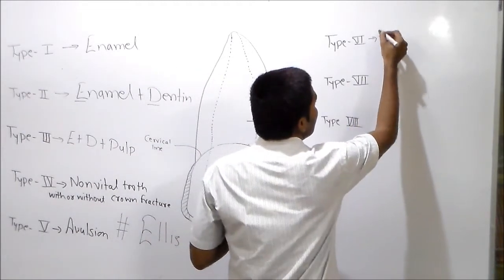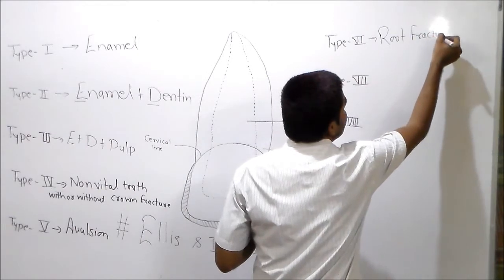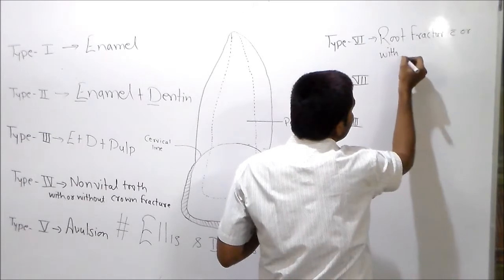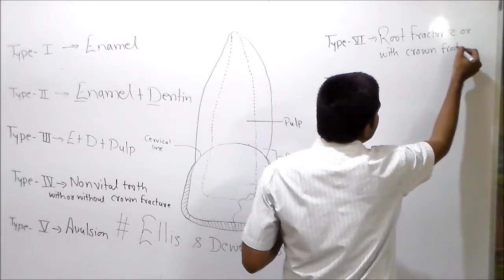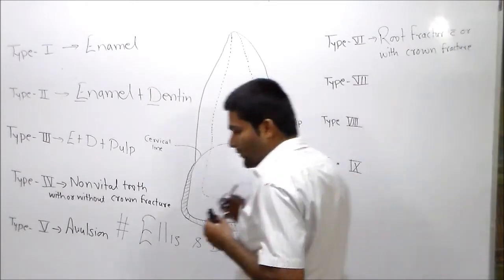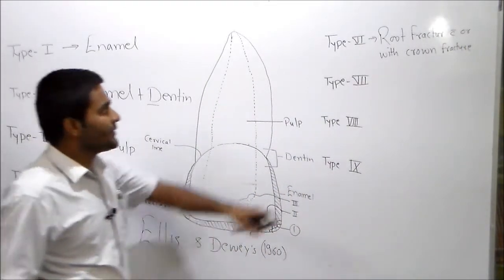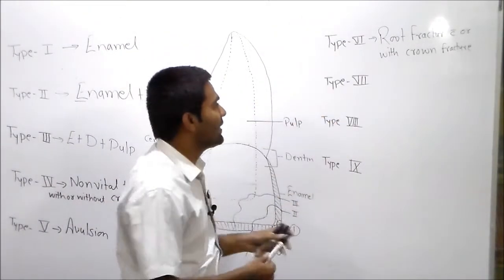Now type six, class six. Root fracture, root fracture with or without crown fracture. I mean if you have a patient who has a root fracture, then you will have an enamel, dentin, then you will have a direct class in class 6.